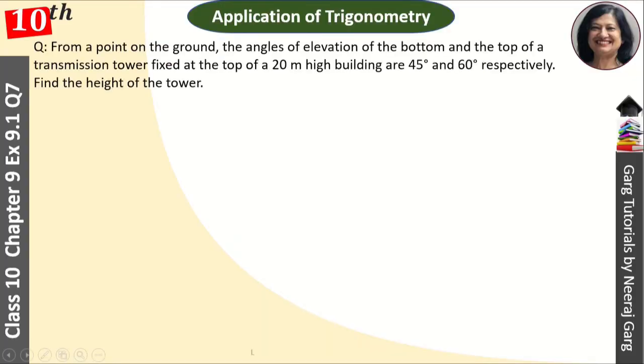Hi, this is Dearest Kirk and you are watching Class 10th Chapter 9 Application of Trigonometry. From a point on the ground, the angle of elevation of the bottom and the top of a transmission tower fixed at the top of a 20 meter high building are 45 degree and 60 degree respectively. Find the height of the tower.